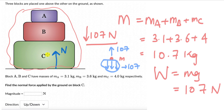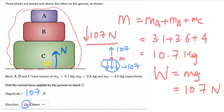The normal force on block C — the only block interacting with the ground — is 107 Newtons acting in the upward direction. There will be normal forces between blocks A-B and B-C, but those are internal to the system, so we don't draw them in this free body diagram. We considered these three blocks as one system, drew the total weight of 107 Newtons downward, and because the blocks aren't accelerating vertically, the normal force upward is also 107 Newtons. So the magnitude of the normal force applied by the ground on block C is 107 Newtons, and the direction is upward.